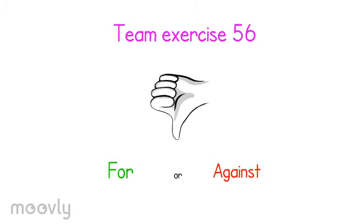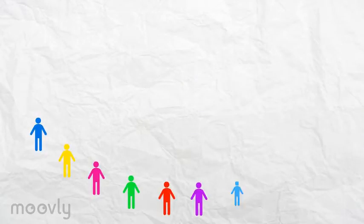Team Exercise 56: For or Against. During the exercise, the participants will sit on chairs in a half circle on one side of the room.